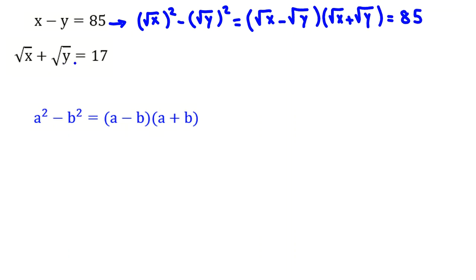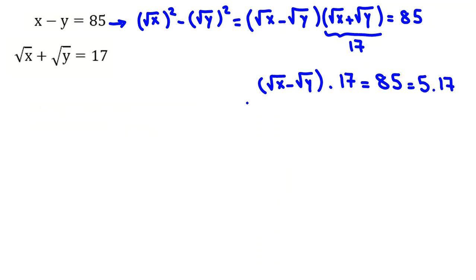From the second equation, I know root x plus root y equal to 17, so I can write root x minus root y times 17 equal to 85. 85 is 5 times 17. So if we divide both sides by 17, then root x minus root y equal to 5.